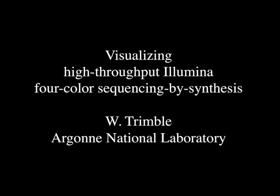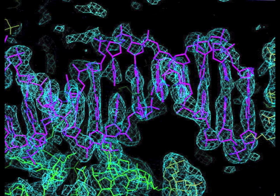Visualizing high-throughput Illumina color sequencing by synthesis. All living things use the same chemical for the storage of genetic information: DNA. Long molecular chains of DNA carry the genetic information from generation to generation of all living things.